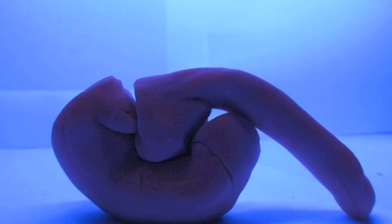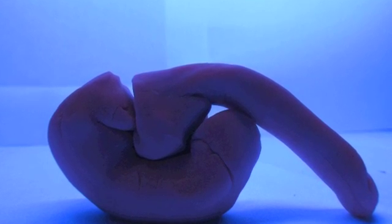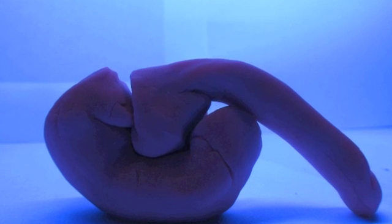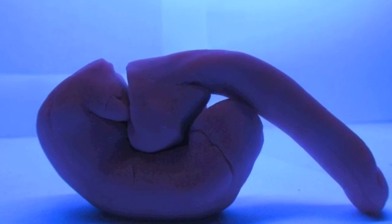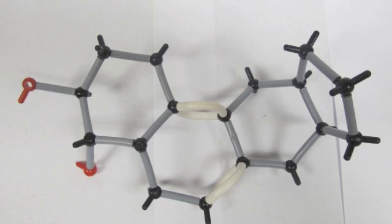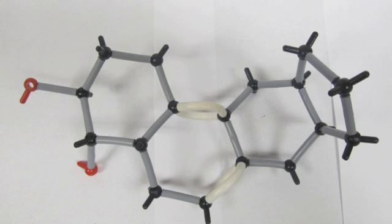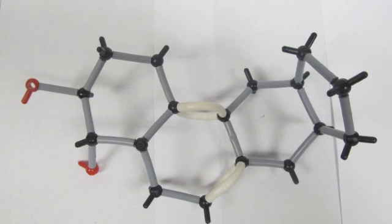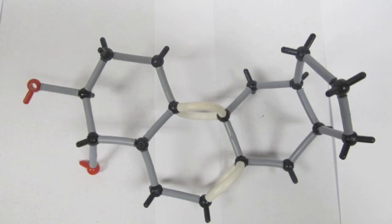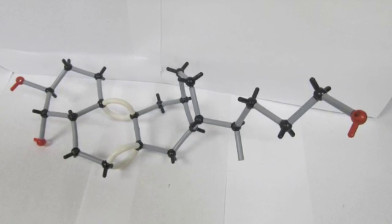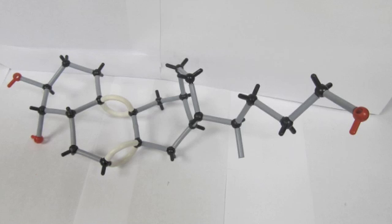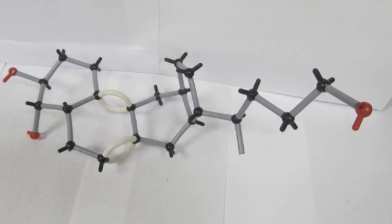The kidneys add another hydroxyl group. Here is the calcidiol before a hydroxyl group is added. And here is after the hydroxyl group is added to form calcitriol or vitamin D.